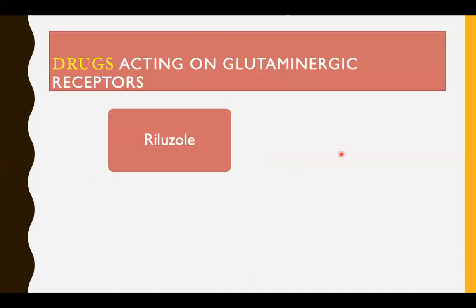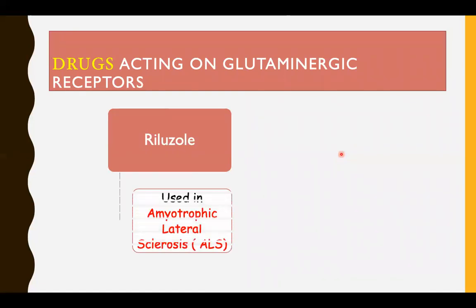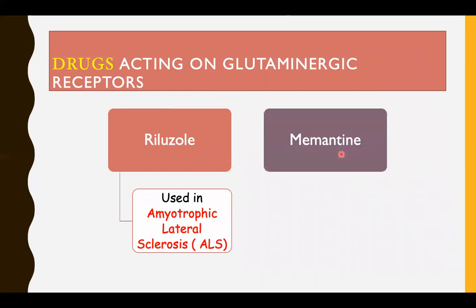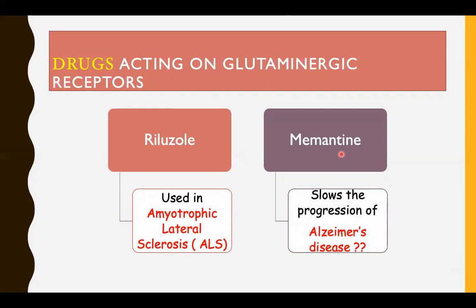Drugs acting on glutamatergic receptors include riluzole, which is widely used in the treatment of ALS (amyotrophic lateral sclerosis) — known as Lou Gehrig's disease in the USA after the famous baseball player who died of the disease — and memantine, which is thought to slow the progression of Alzheimer's disease.